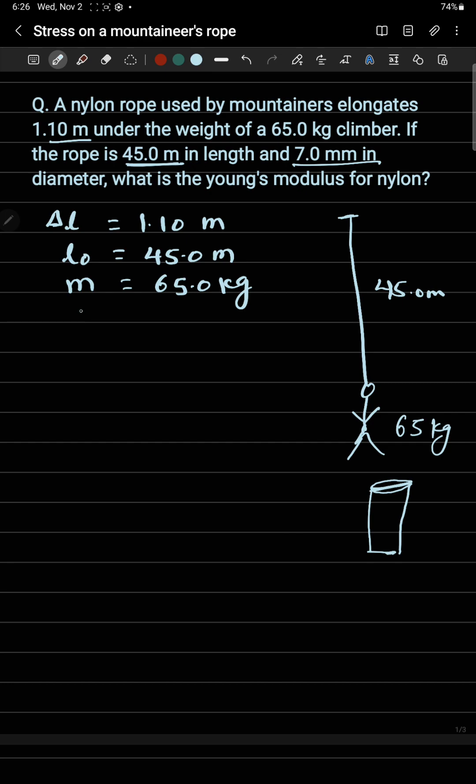The diameter is this distance. Diameter D is given here, which is 7.0 millimeters. If I write it in meters, it will be 7.0 times 10 to the power minus 3 meters to make the units consistent.